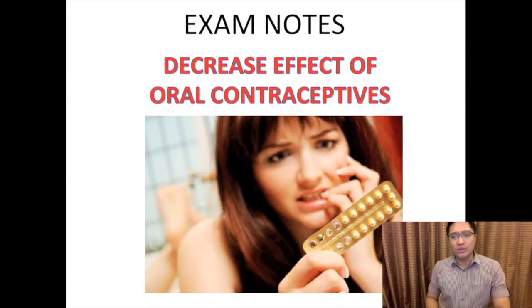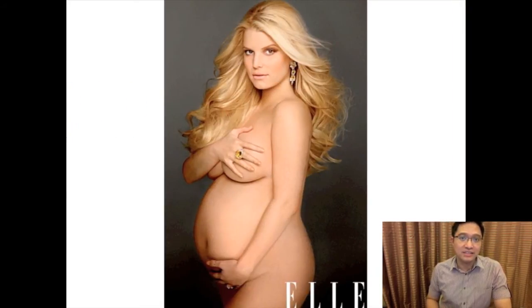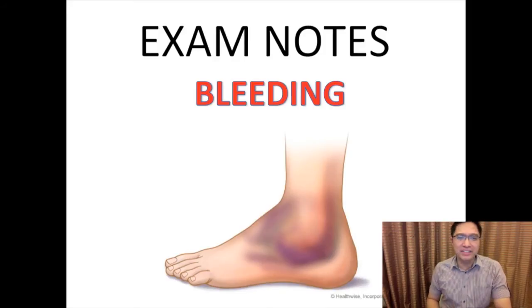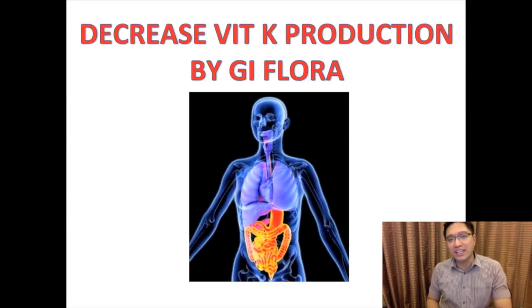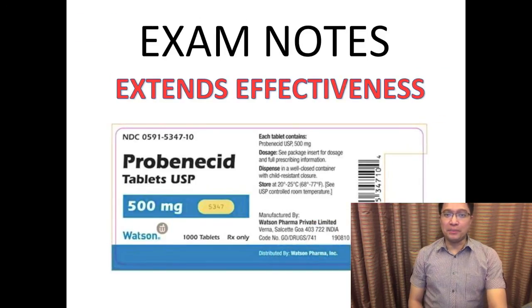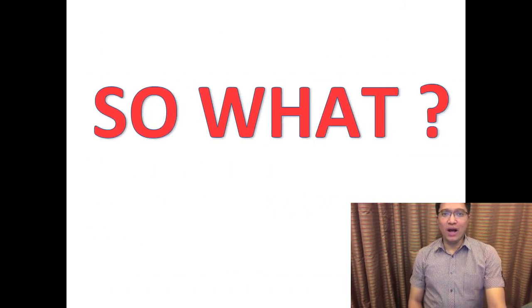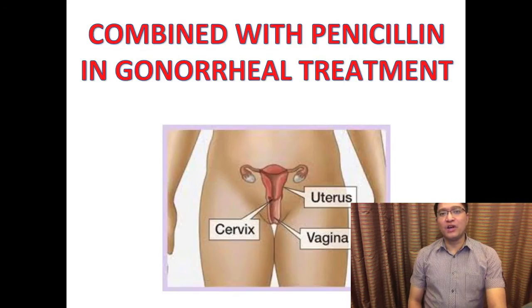Now for exam notes. Penicillin has a decreased effect on oral contraceptives — if someone is taking oral contraceptives while taking penicillin, the contraceptive may not be effective and the client may get pregnant. Penicillin can also cause bleeding because it affects GI flora: decreased GI flora leads to decreased vitamin K production, decreased clotting factors, and increased probability of bruising. It is also important to know that Probenecid extends the effectiveness of penicillin inside the body. When clients suffer from gonorrhea, they take penicillin plus Probenecid to extend the antibiotic's effectiveness.